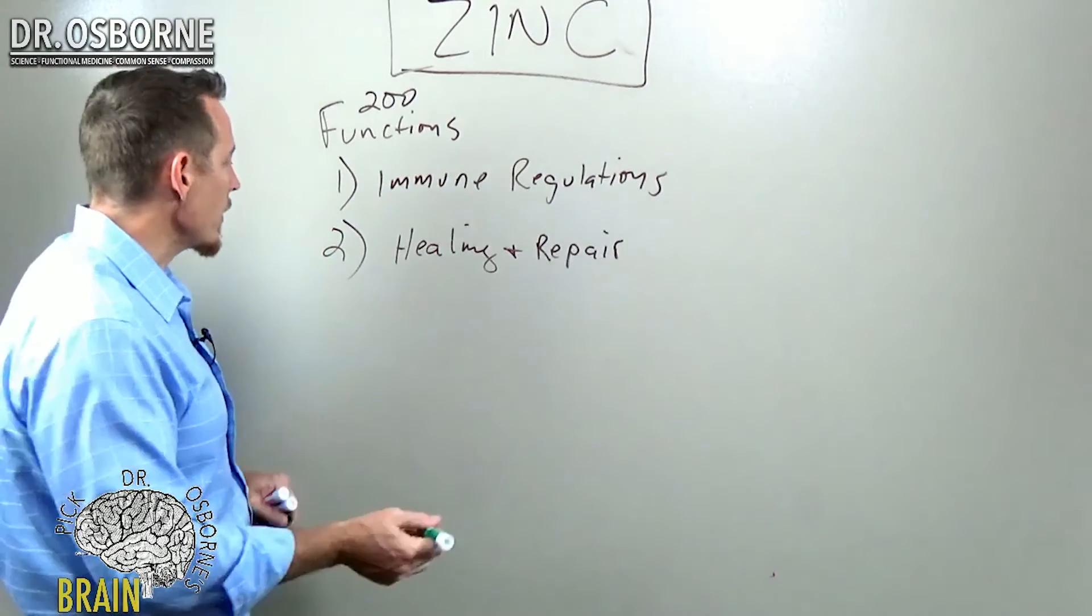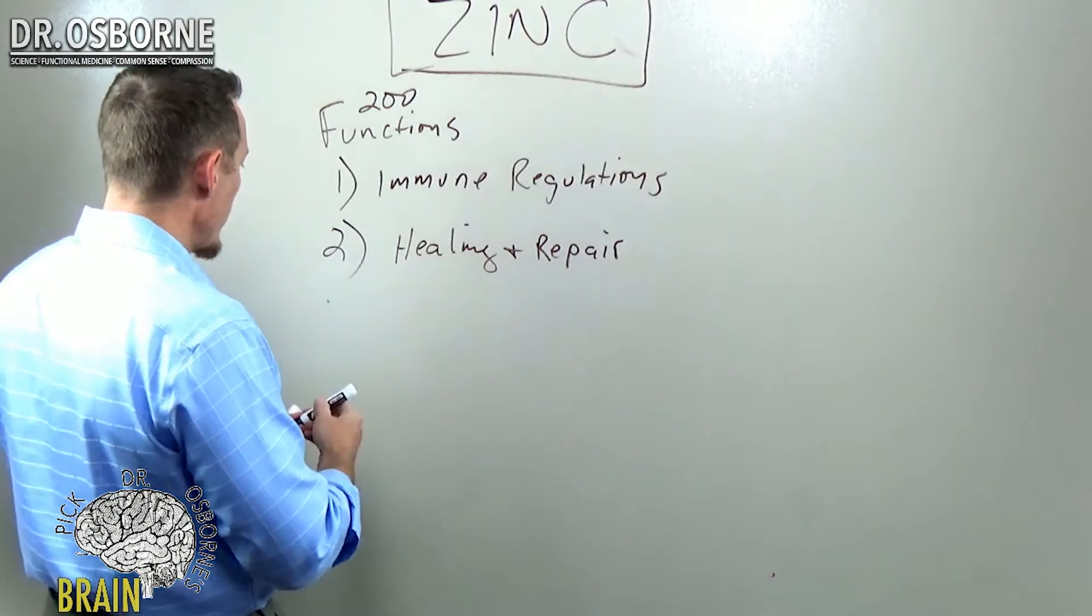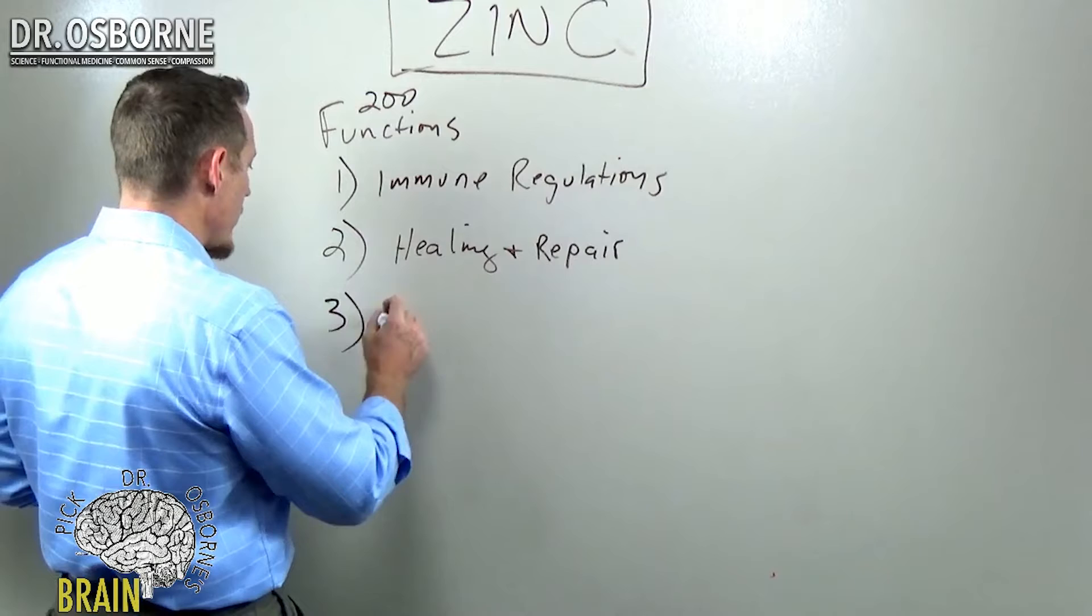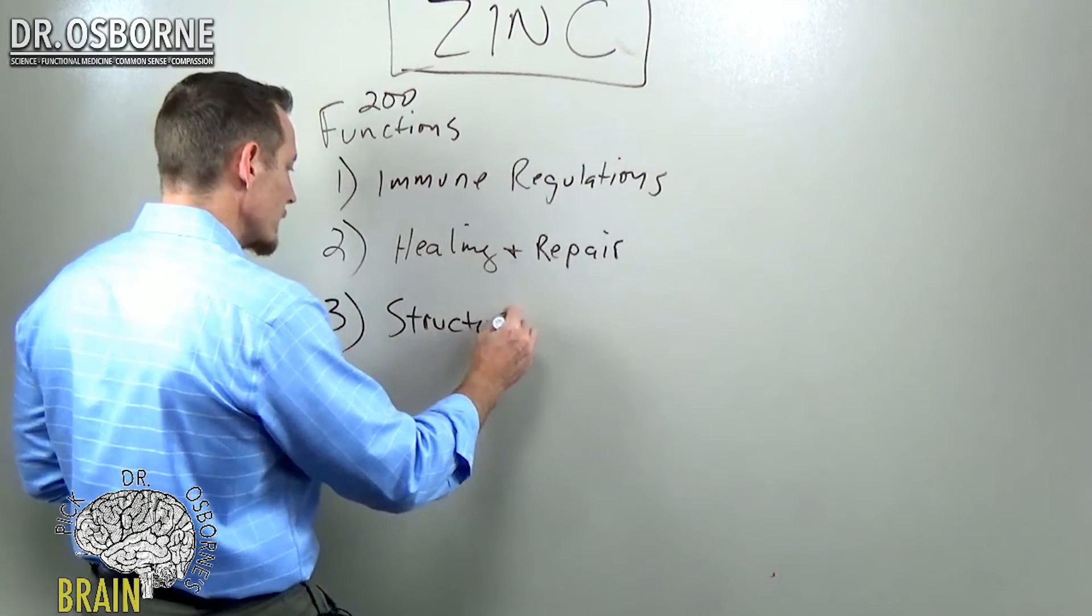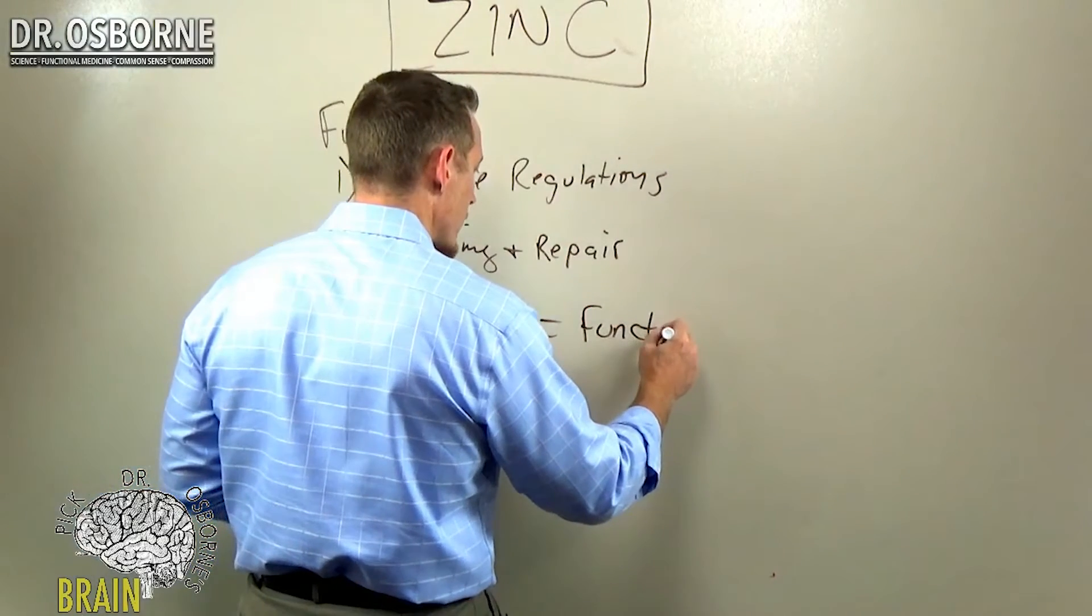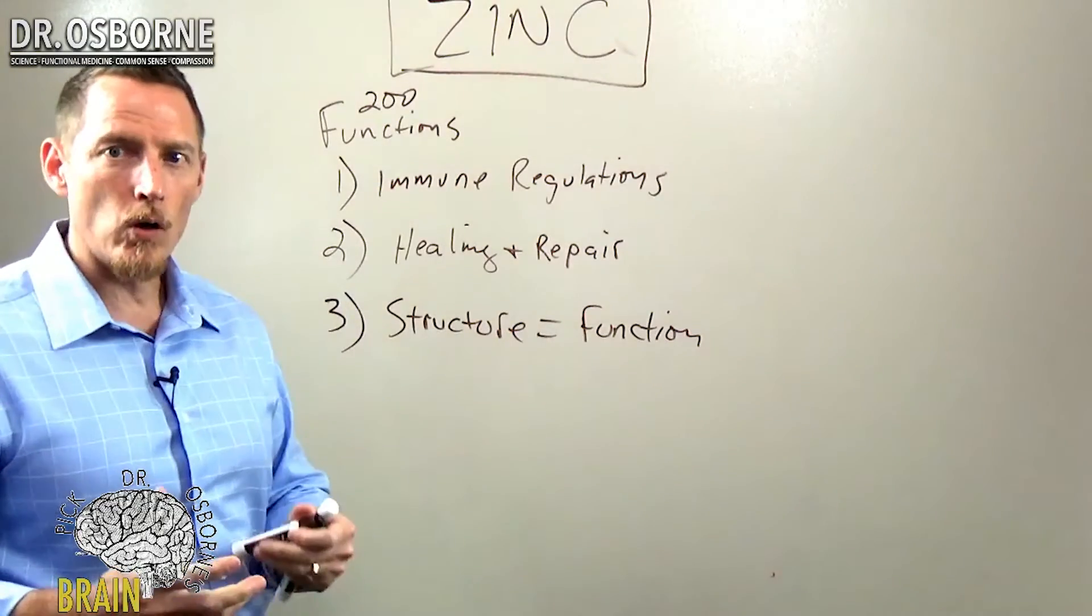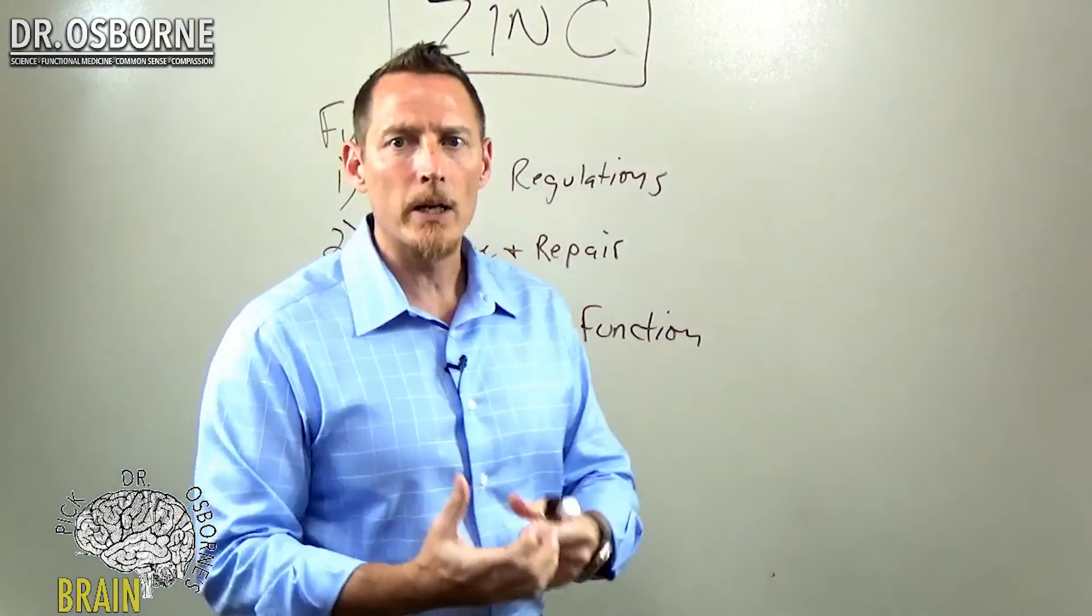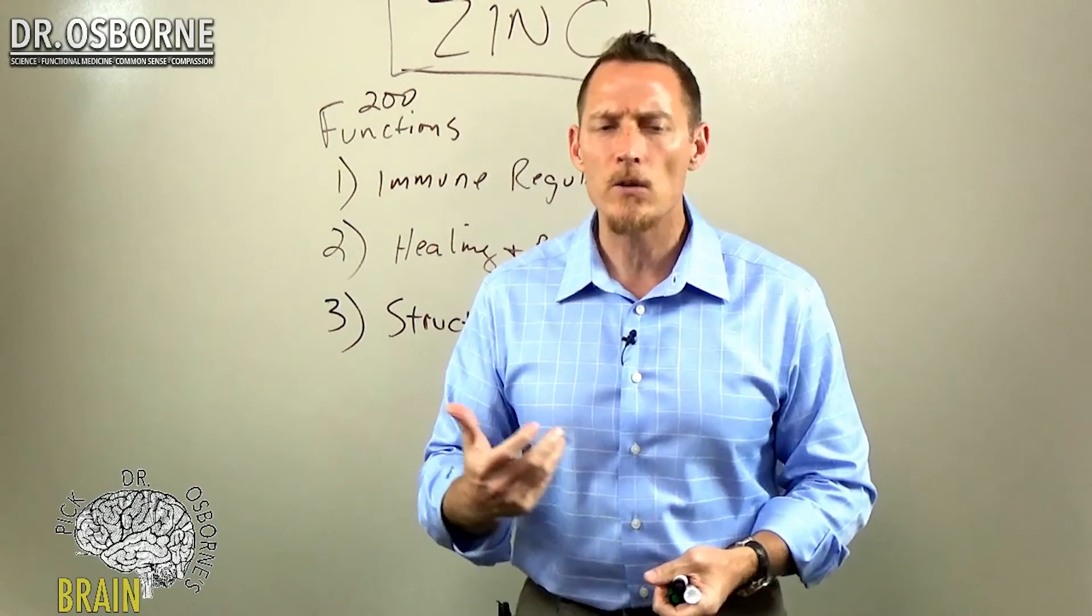It's necessary for the structure of a number of different proteins. There's an old saying in biochemistry and that is structure dictates function. Square tires obviously don't roll. So zinc plays a role in folding the different proteins in your body molecularly, the very small microscopic proteins. It helps your body fold them into the right shape so that they work and they do their job properly.